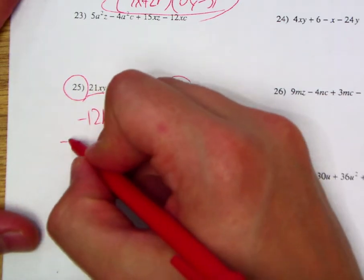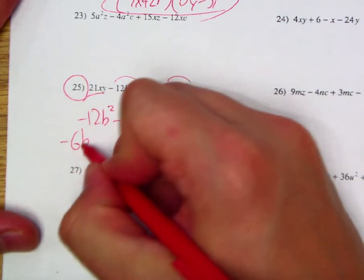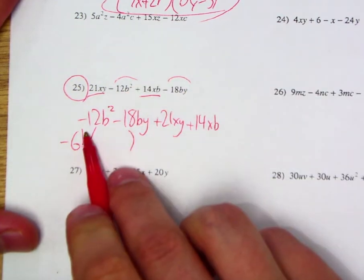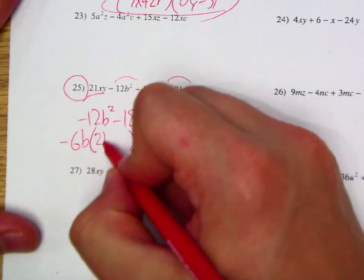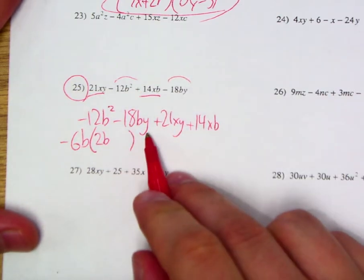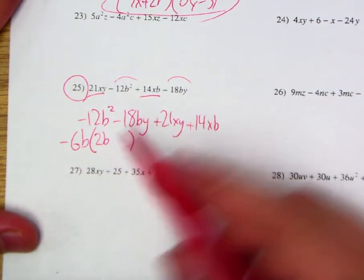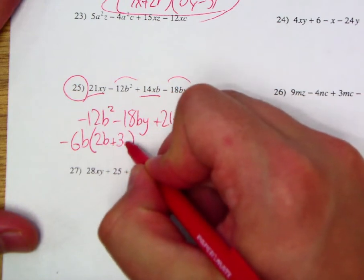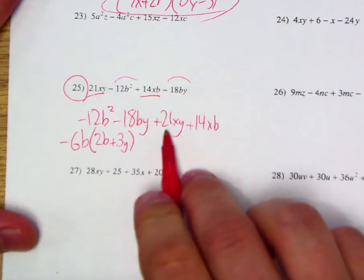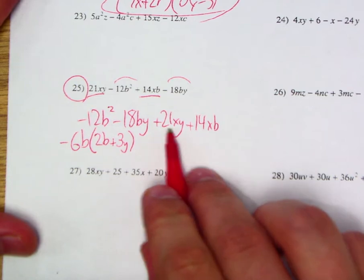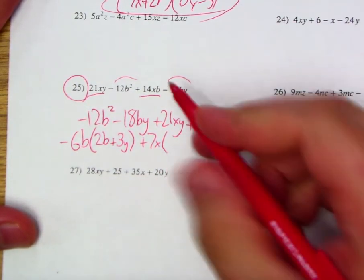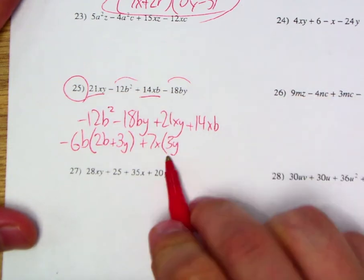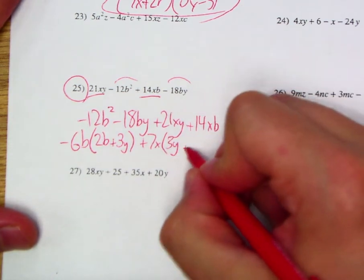So let's try that. Let's try to factor these pieces out. I'm going to factor out a negative 6b and see what's left. So negative 12b² divided by negative 6b is going to give me a 2b, and negative 18by divided by negative 6b is going to give me a positive 3y. Next up, I'm going to factor a 7x out. So positive 7x, and we would be left with a 3y, and over here, we're going to have a positive 2b.